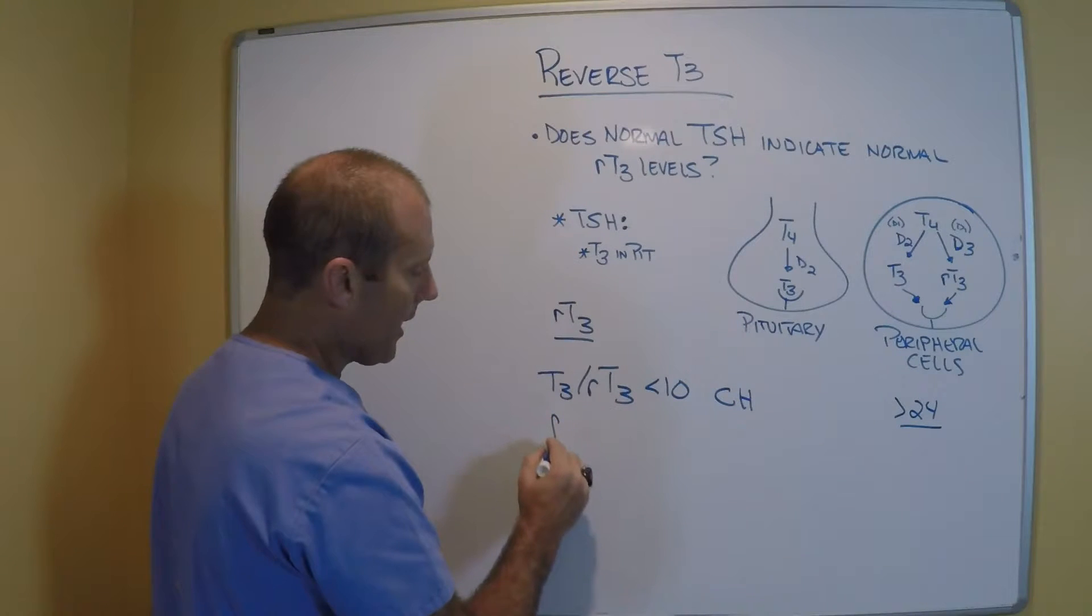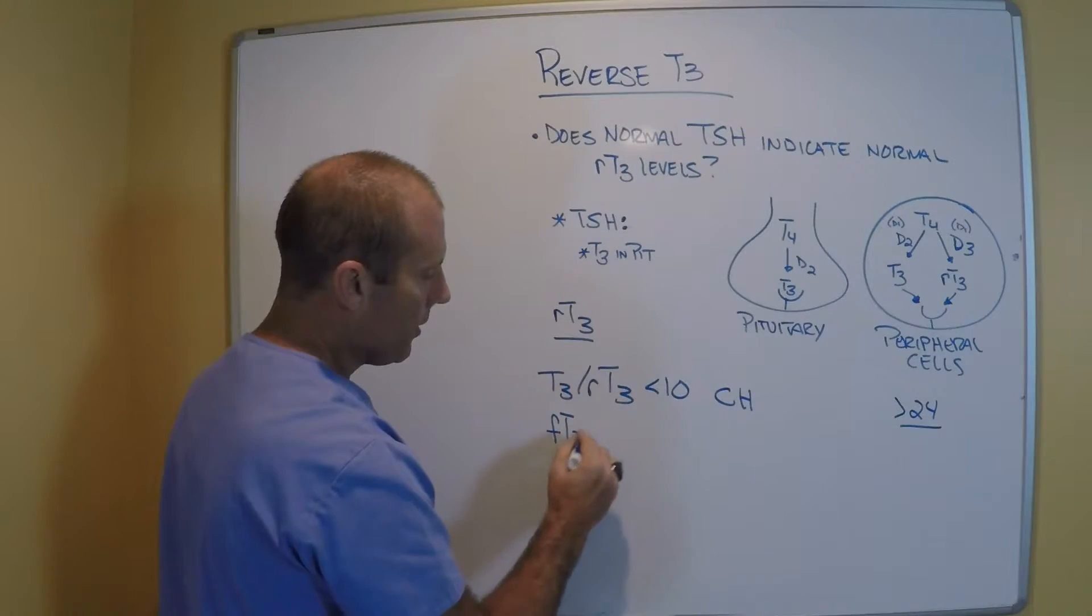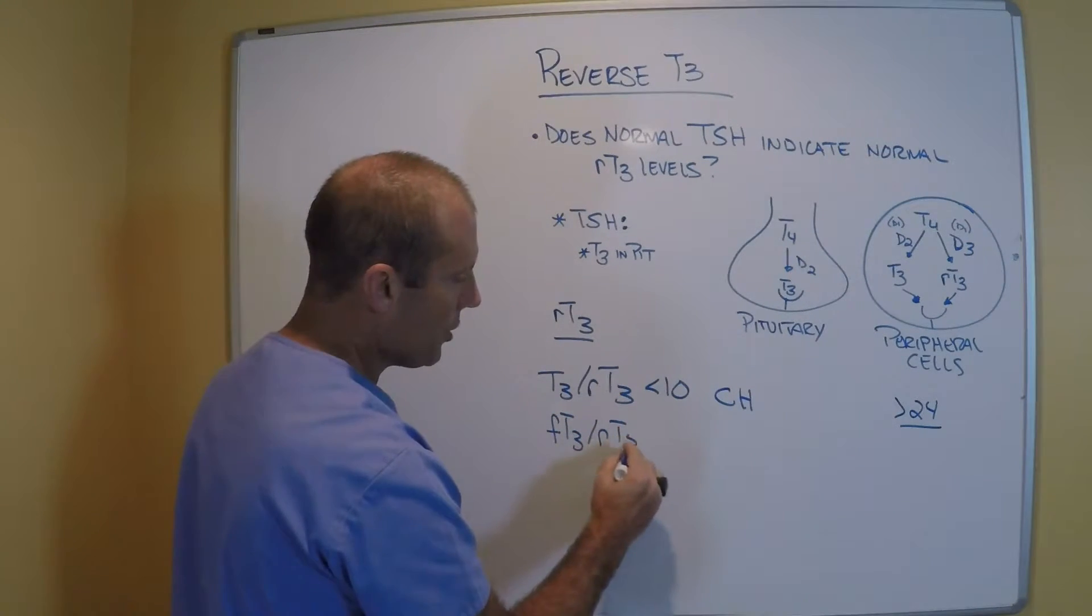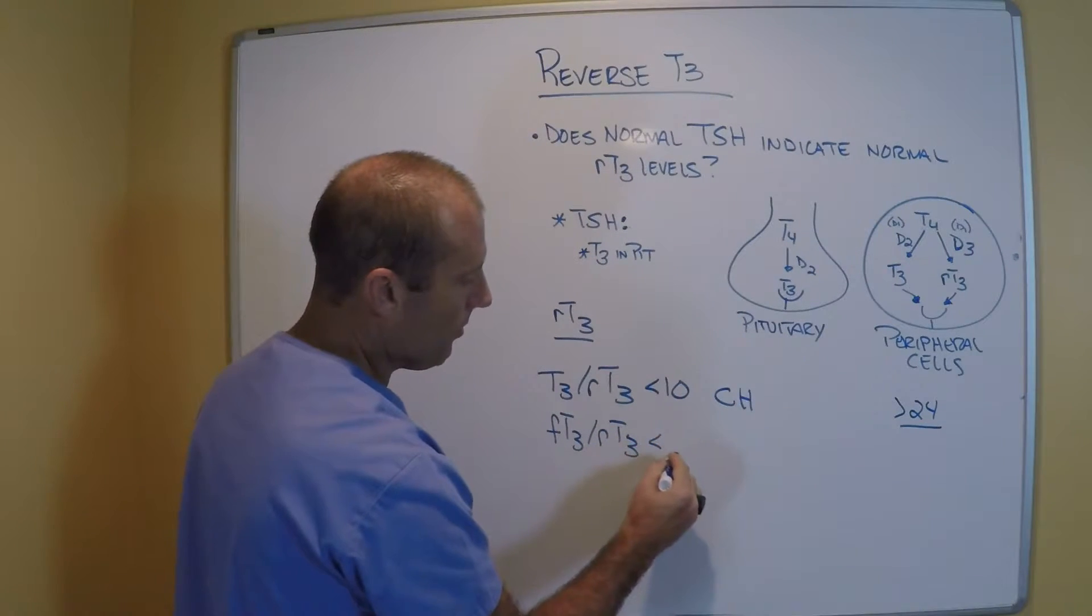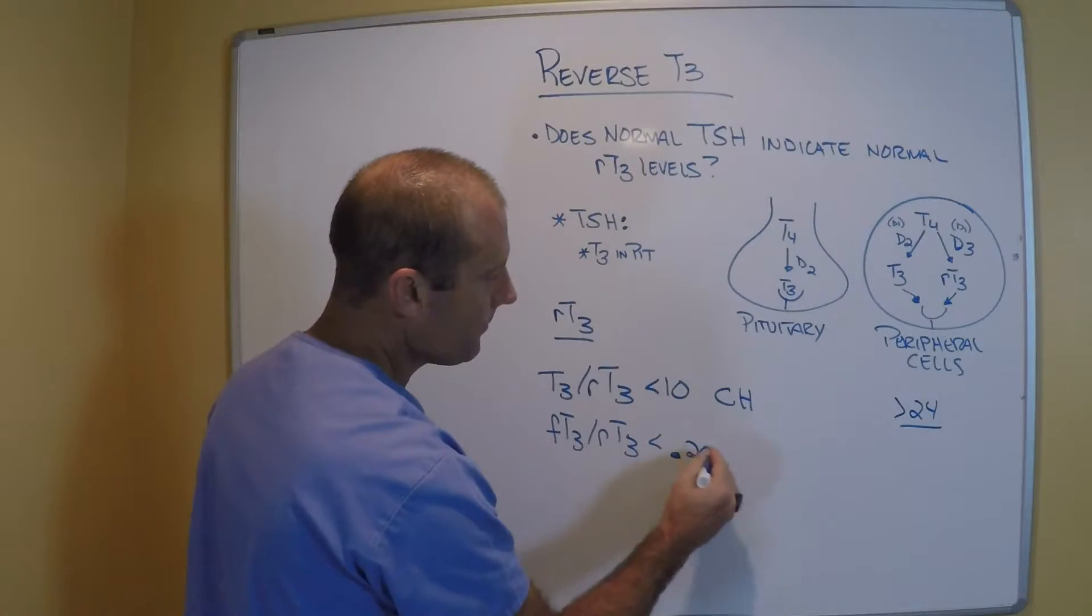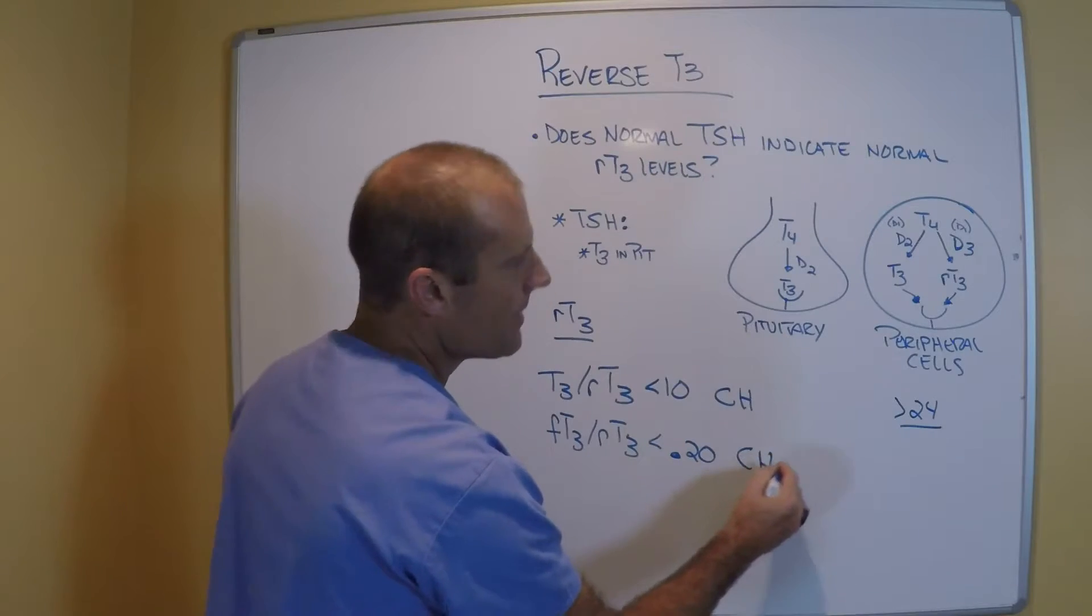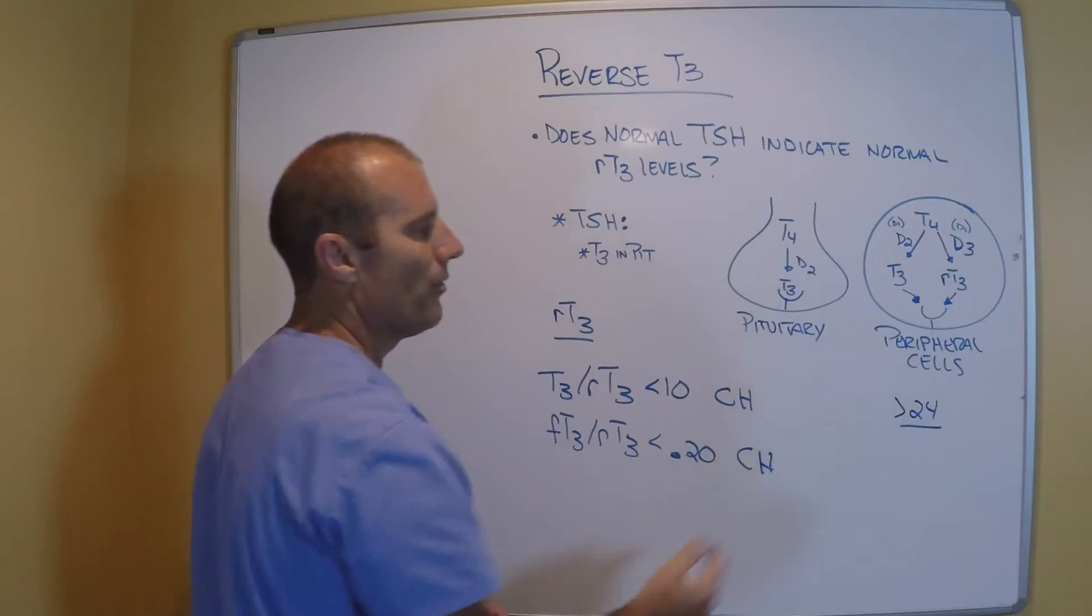They're making more reverse T3 in relation to T3. The other value we can look at is the free T3 to reverse T3 ratio. If that is less than 0.2, then the person has cellular or peripheral hypothyroidism.